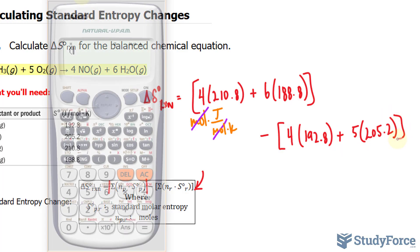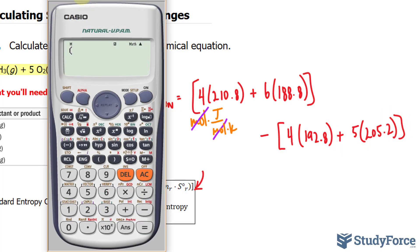Let's use our calculator, and I want to do this all in one go. So four times 210.8 plus six times 188.8 minus four times 192.8 plus five times 205.2.